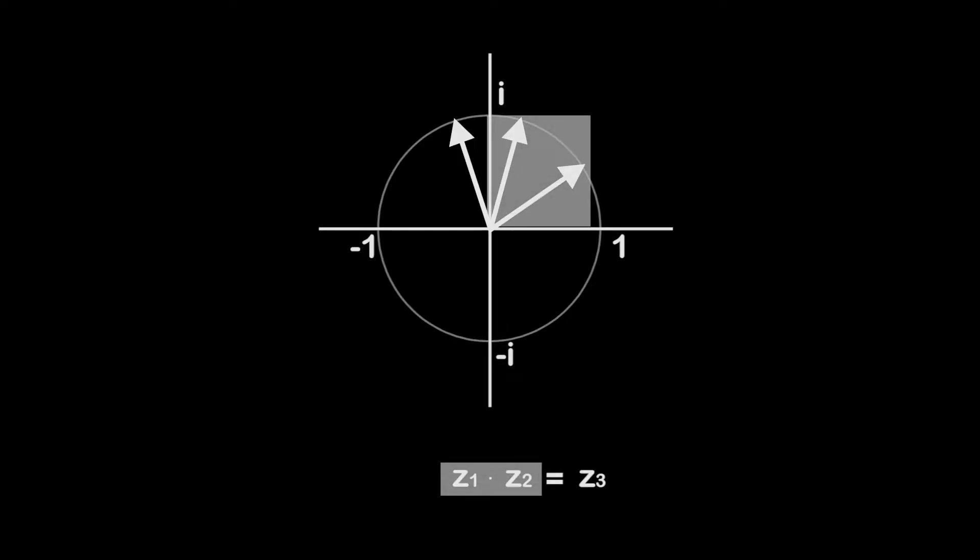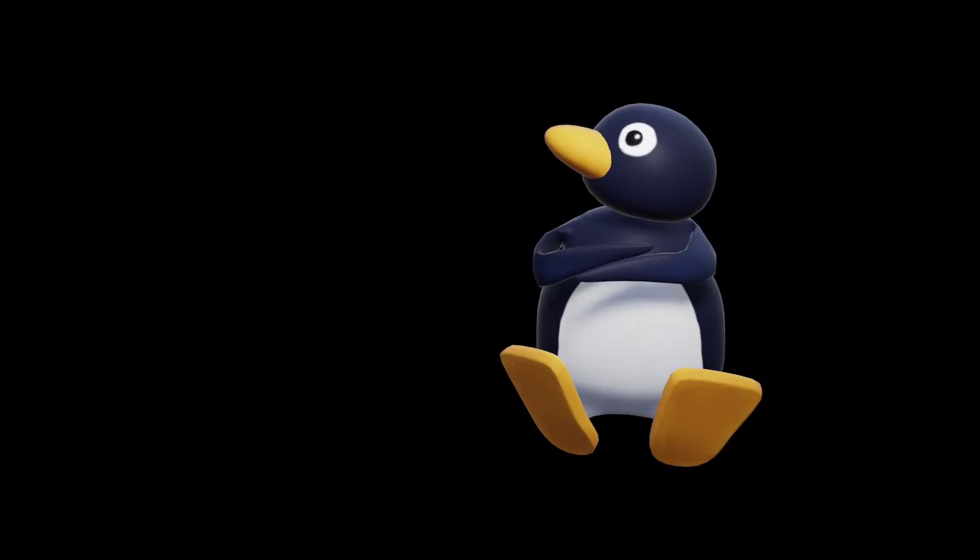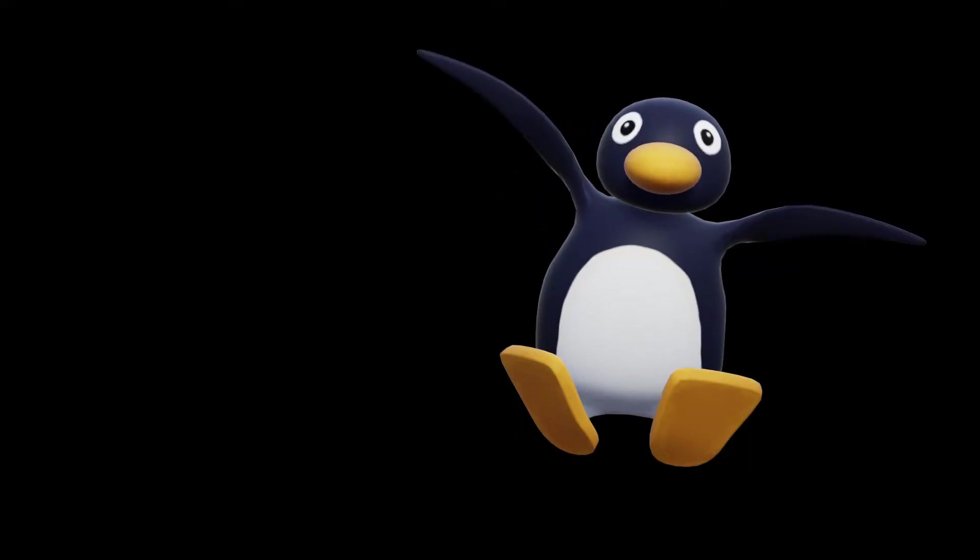Remember how multiplying two unit complex numbers results in a pure rotation? In other words, multiplying two complex numbers with magnitude one results in a new complex number with magnitude one. Ah, I see. So multiplying two unit quaternions results in another unit quaternion. Then it's a rotation. That's easy. Well, you're partly right. It does result in another unit quaternion. But we are interested in making a 3D rotation. Quaternions are four-dimensional, so it's not as simple as that.